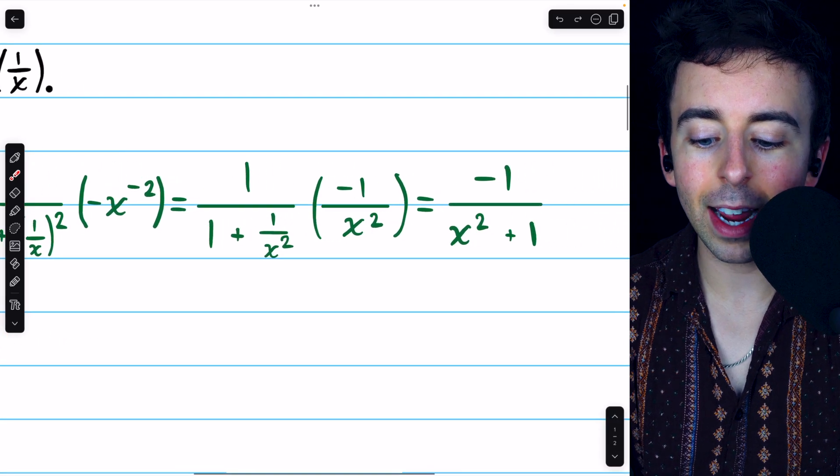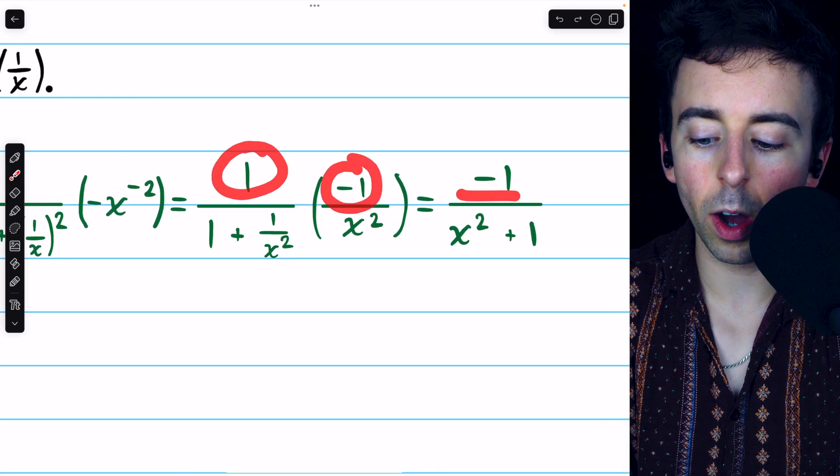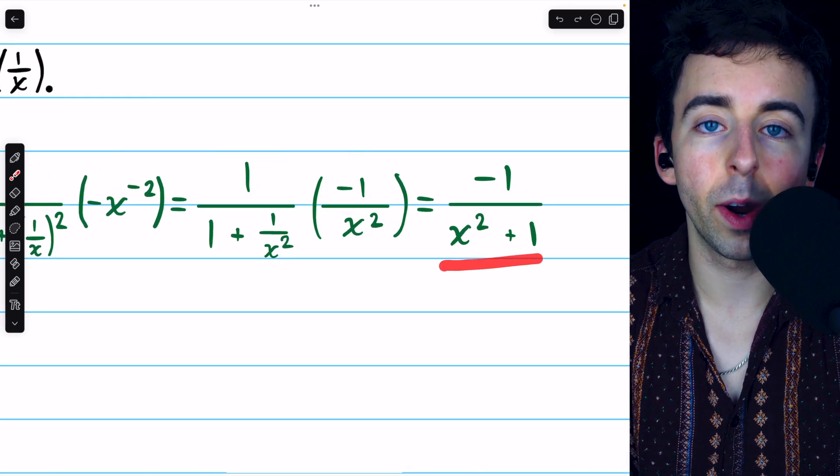And so, we arrive at our fully simplified answer, negative 1 over x squared plus 1.